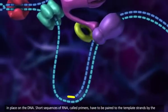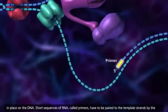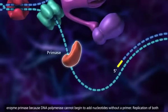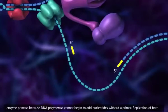Short sequences of RNA, called primers, have to be paired to the template strands by the enzyme primase because DNA polymerase cannot begin to add nucleotides without a primer.